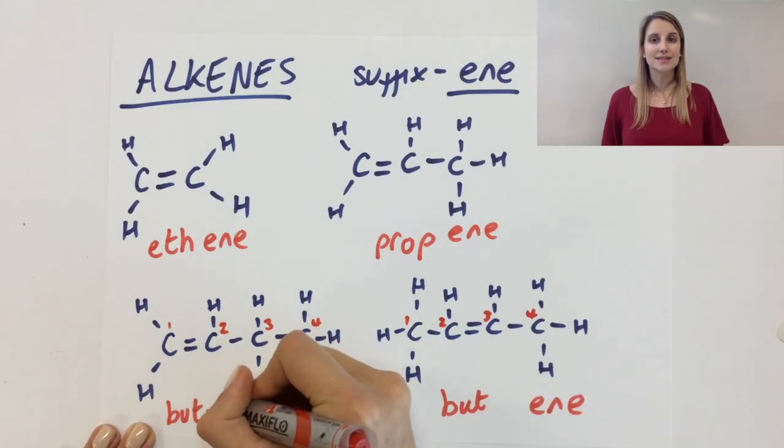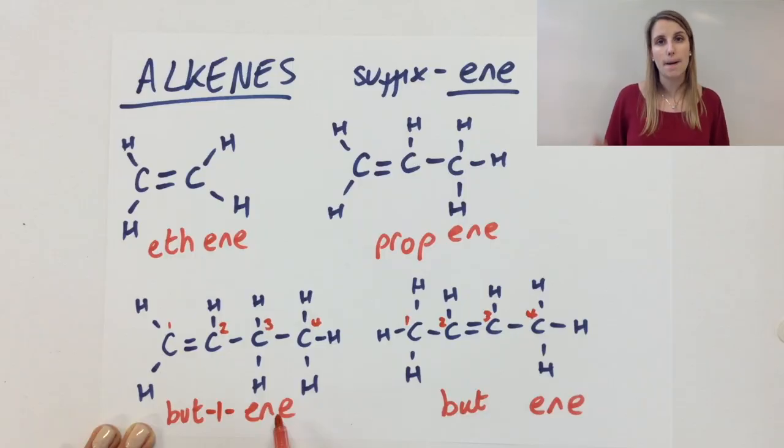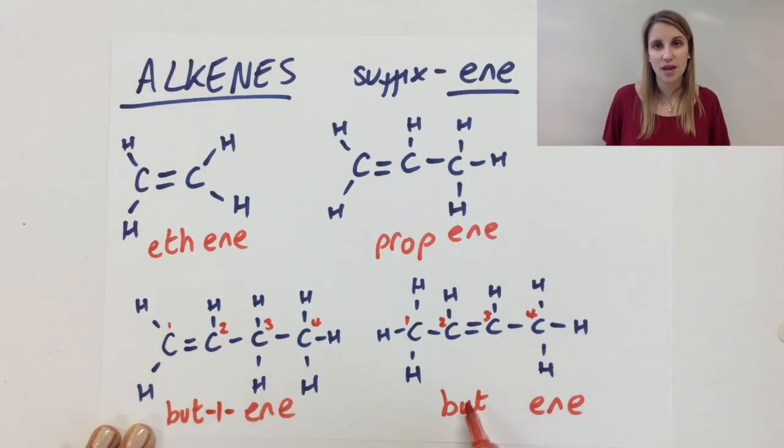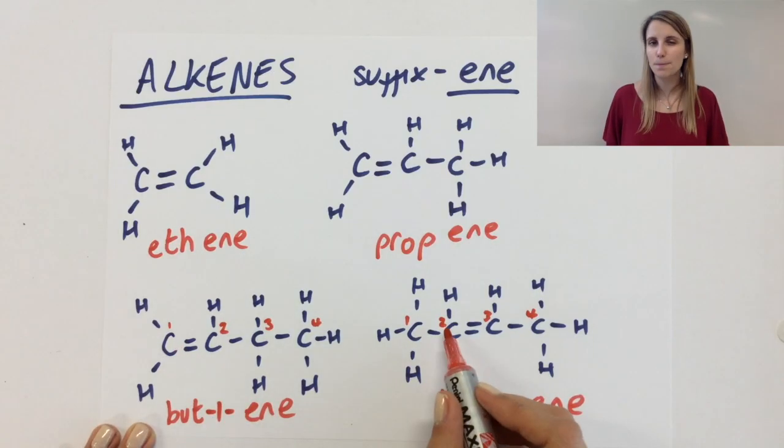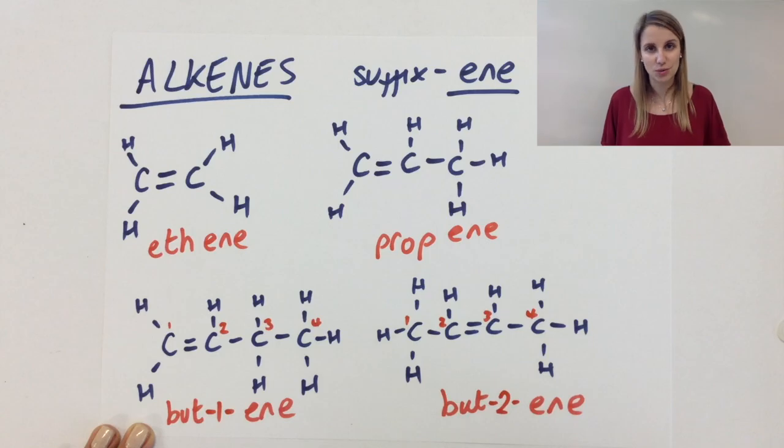Now what you can see is that the double bond starts on carbon number one in the example on the left. So we call it but-1-ene. The one on the right, it doesn't matter which side you start numbering from because either way, the double bond will begin on carbon number two. So we call this one but-2-ene.